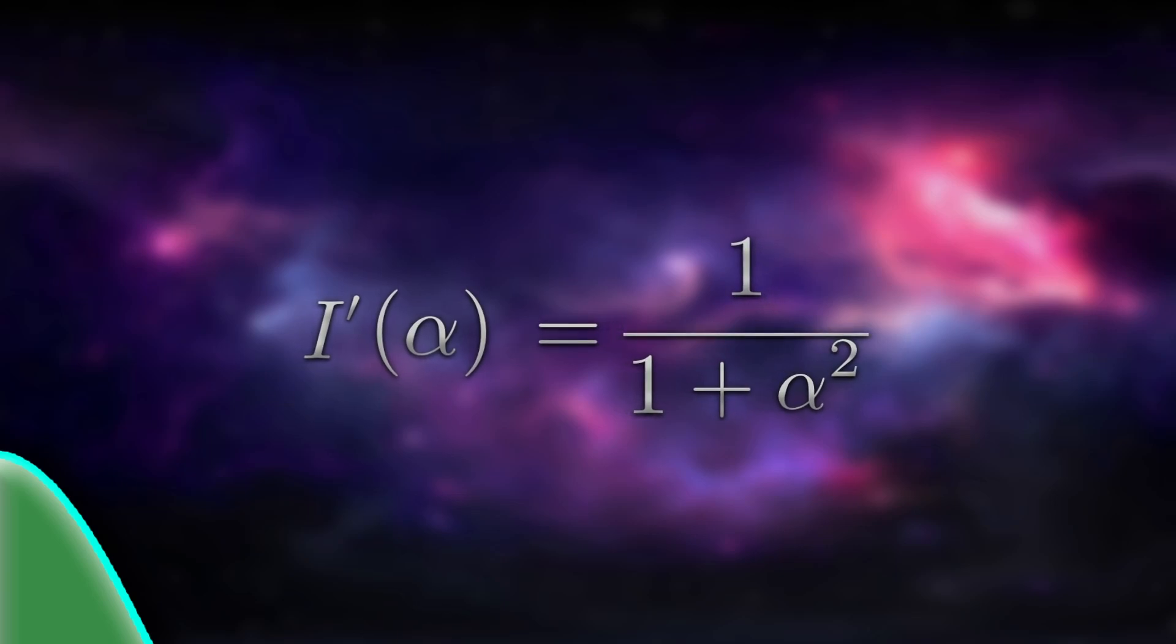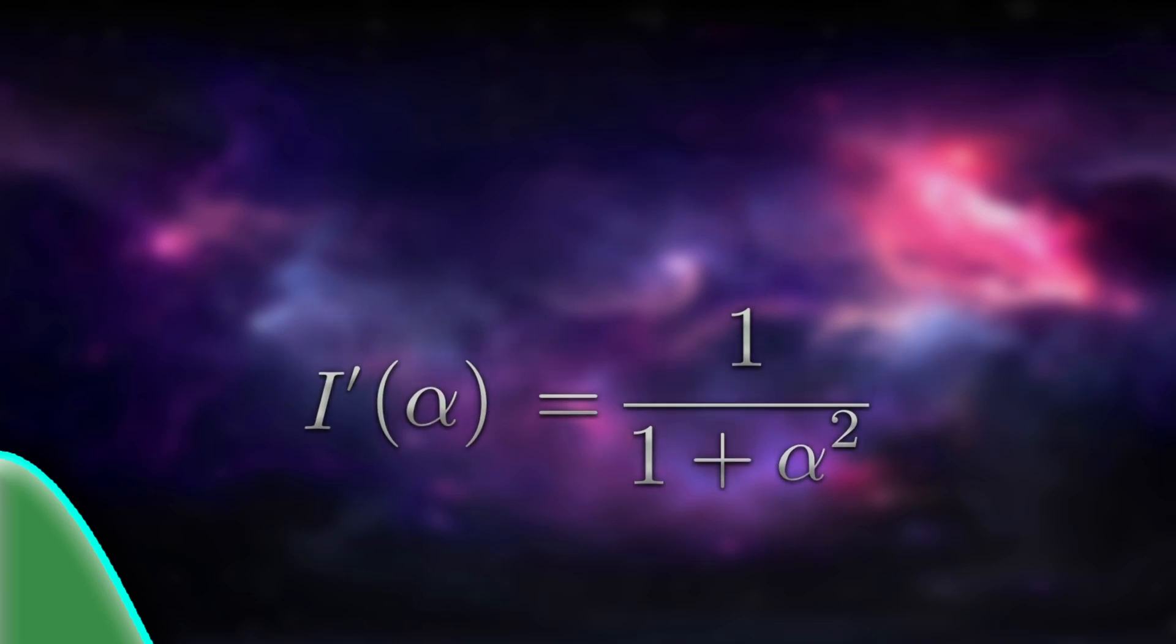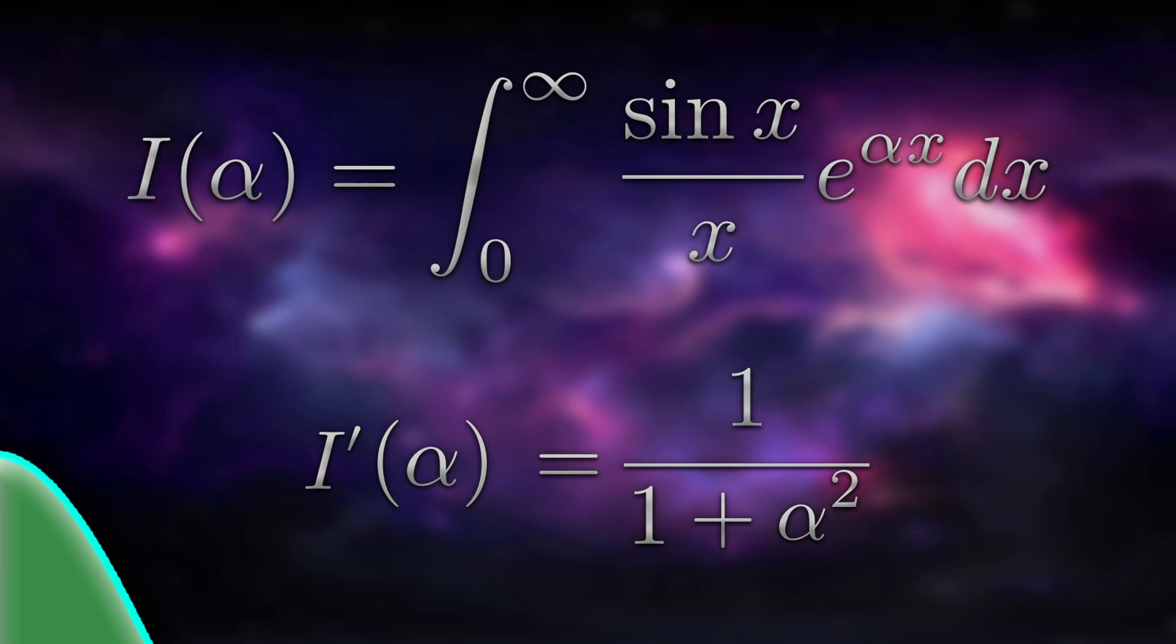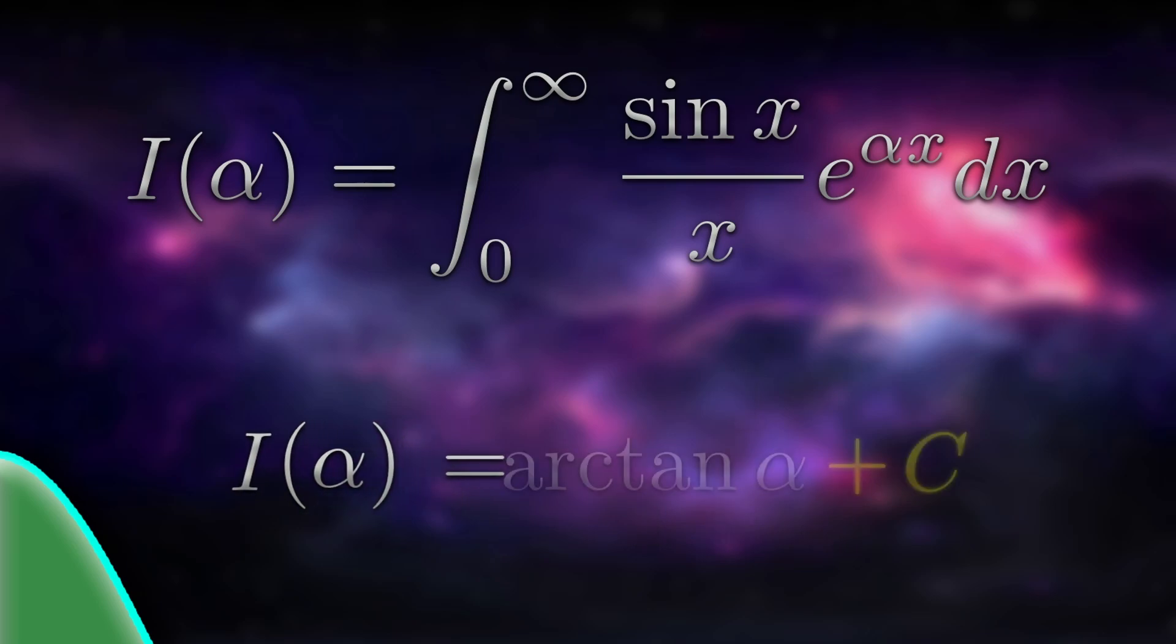Let's not lose track of where we're going. We want to evaluate our original integral, which happens to be i of zero. We have the derivative of i of alpha. We want i of alpha. So let's integrate both sides with respect to alpha. The integral of 1 over 1 plus alpha squared, by the way, is arctan alpha. You could do this by a substitution, but this is a pretty standard result. Don't forget the plus c. It's very important here.